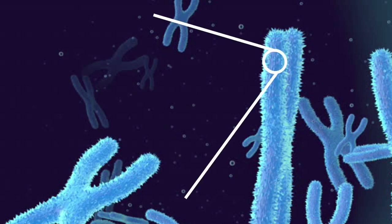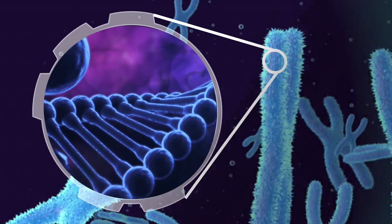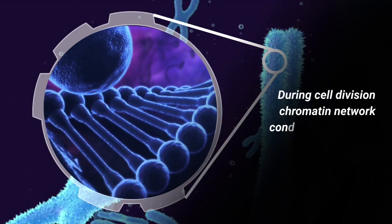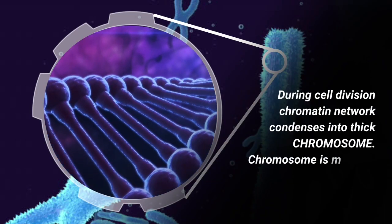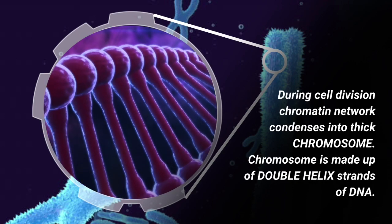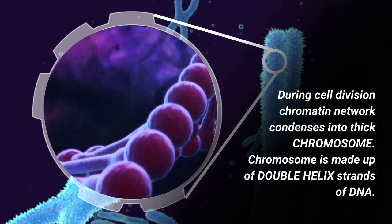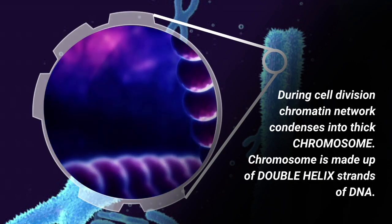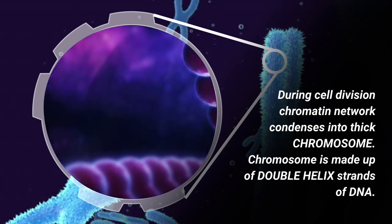DNA acts as the blueprint of an organism. During cell division, the chromatin network present in the nucleus condenses into chromosomes. Chromosomes are made up of double helix strands of DNA.